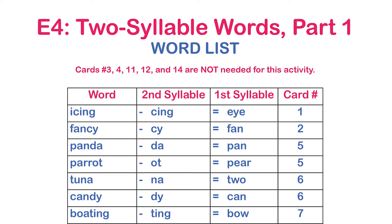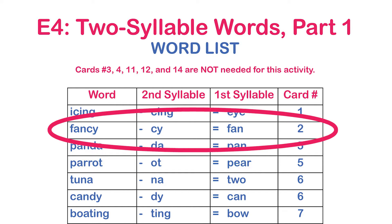Before you start, print out the picture cards and the word list from our website. The word list will show you which card to use for each round of this activity. For example, for the word fancy, the list refers you to card number two, which has a picture of a fan.